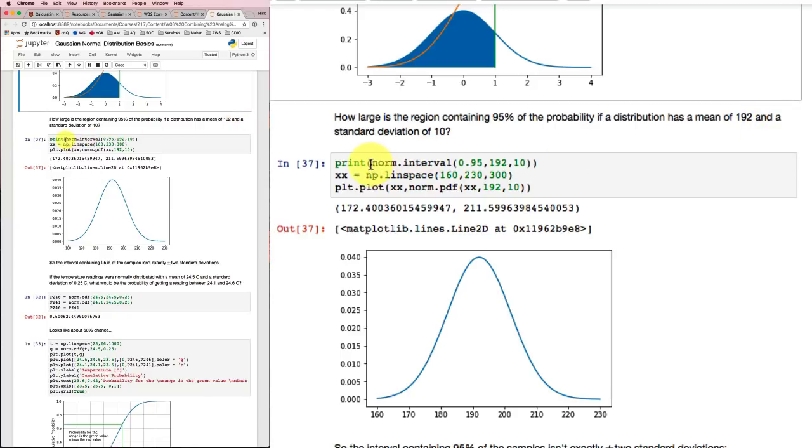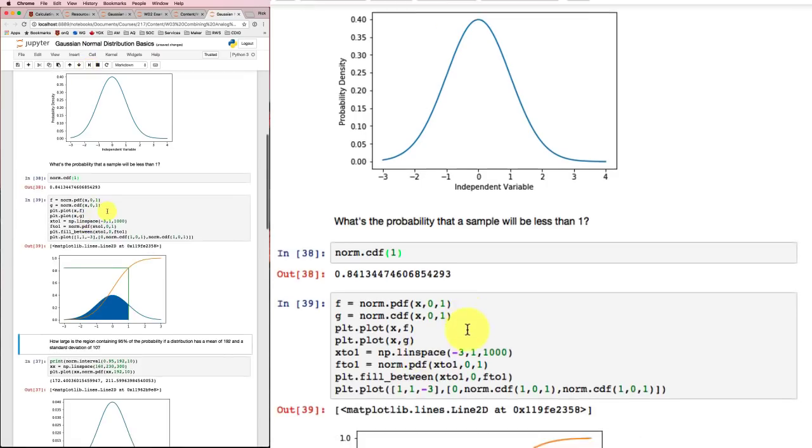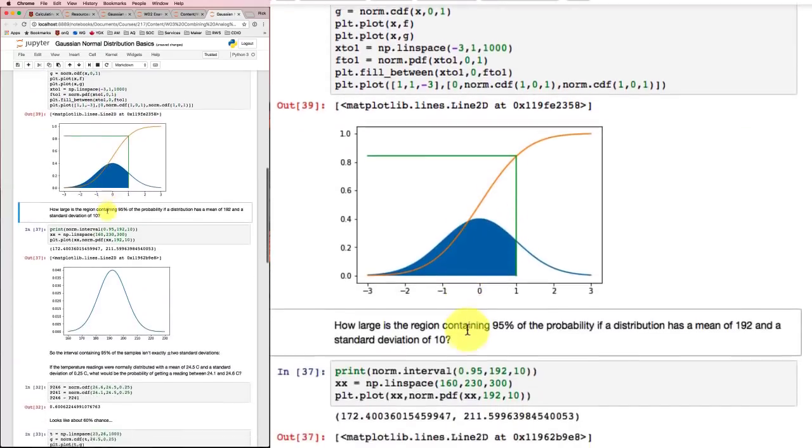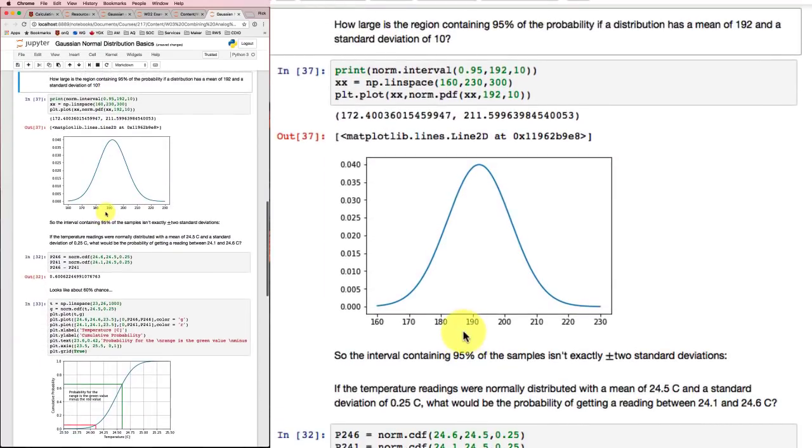So if I use this norm interval function to find for 95% probability with a mean of 192 and a standard deviation of 10, what are the bounds of that interval? And I print it out.